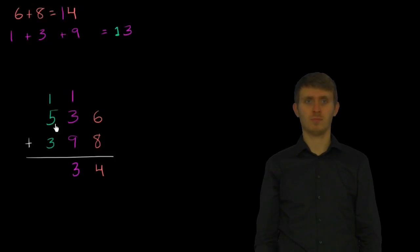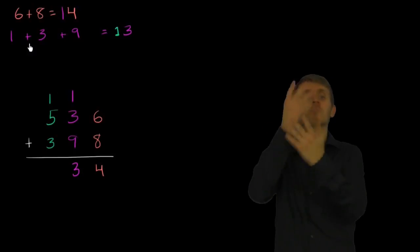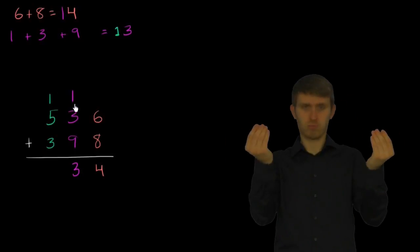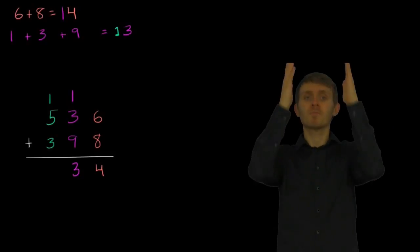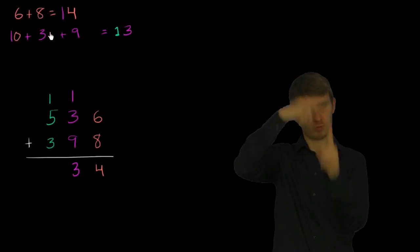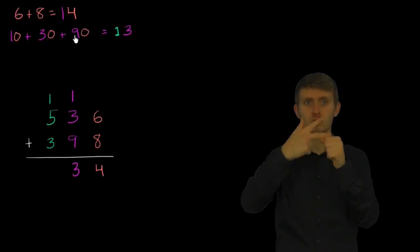You might say, wait, how does that make sense? Remember, this is in the tens place. When we're adding 1 ten plus 3 tens plus 9 tens, we're actually adding 10 plus 30 plus 90.